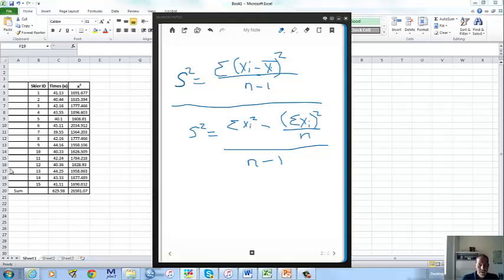Okay, hopefully we have enough room here. S squared equals, so the summation of x sub i squared is 26501.07, 26501, 0.07.